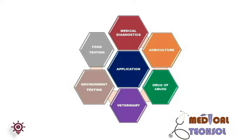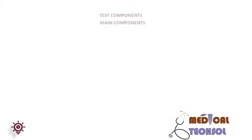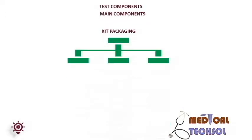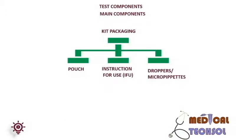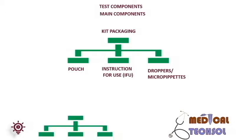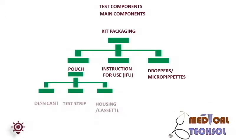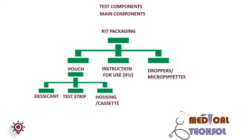Regarding test components, the main components of kit packaging are the pouch, instructions for use (IFU), and dropper. The pouch consists of a test strip, housing, cassette, and desiccant to absorb moisture inside the pouch.